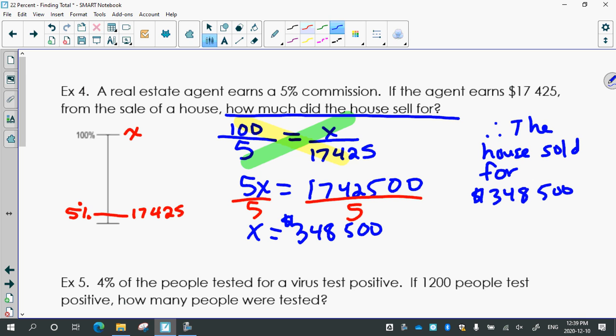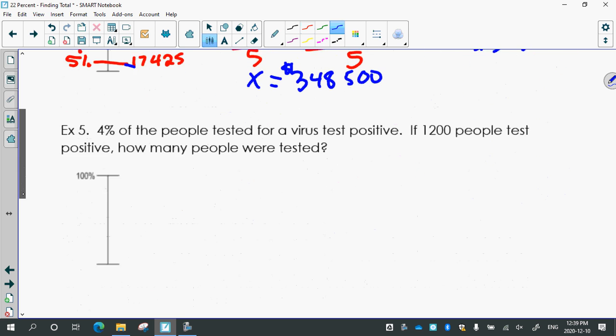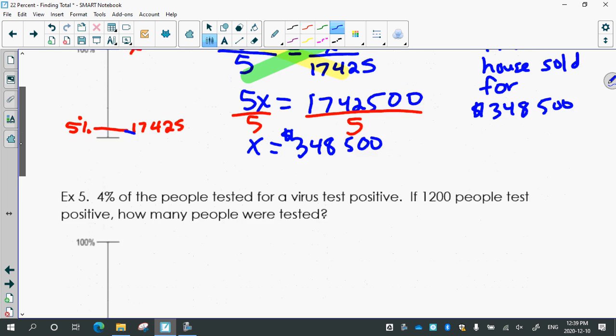And then how much did the house sell for? Therefore, the house sold for $348,500. So that's a much bigger number than the 17,000. So it makes sense that it's only 5% of that. That's why it's a good thing to use your diagram and draw where 5% would be in relation to 100 or do your best to.